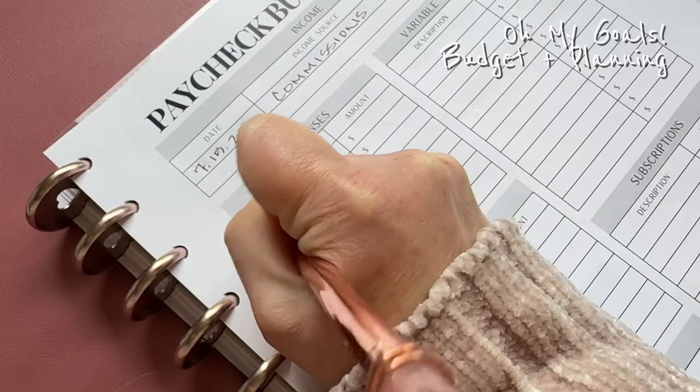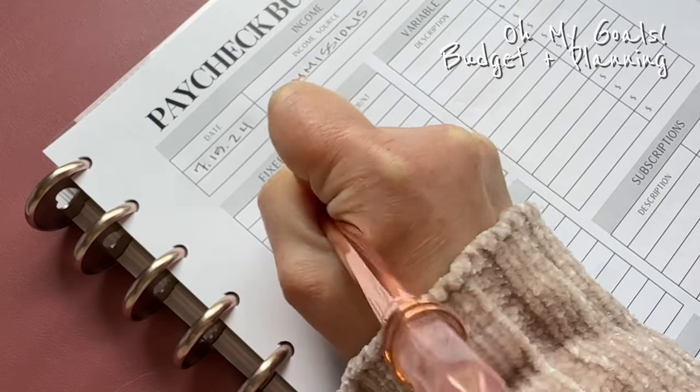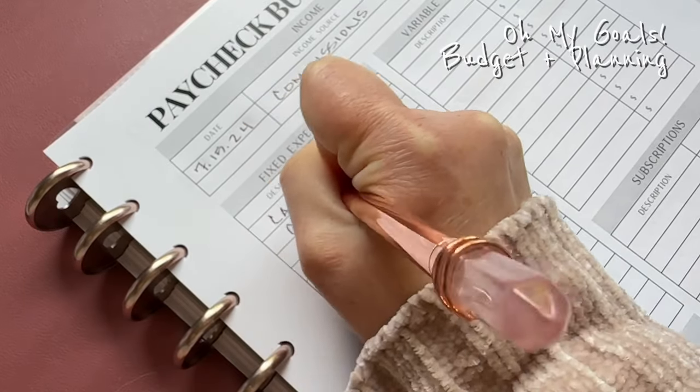So this is his commission after taxes and all his deductions and everything, and also after they take the base pay out because they don't pay you twice for it. So we are going to allocate it for a couple fixed expenses as well as our variables. Although it's not a lot, I mean, it's not the worst check he's ever gotten. Sales are so volatile. Sometimes you could think you're going to have a great month and it just ends up being one of your worst and vice versa. So we're making both of our car payments out of this.